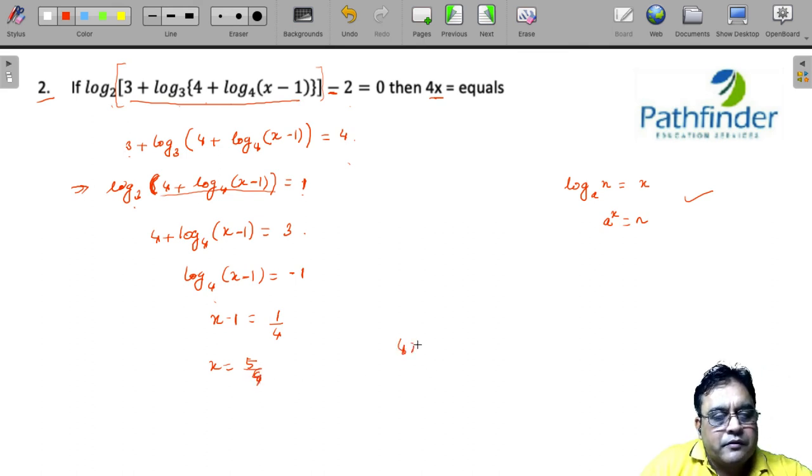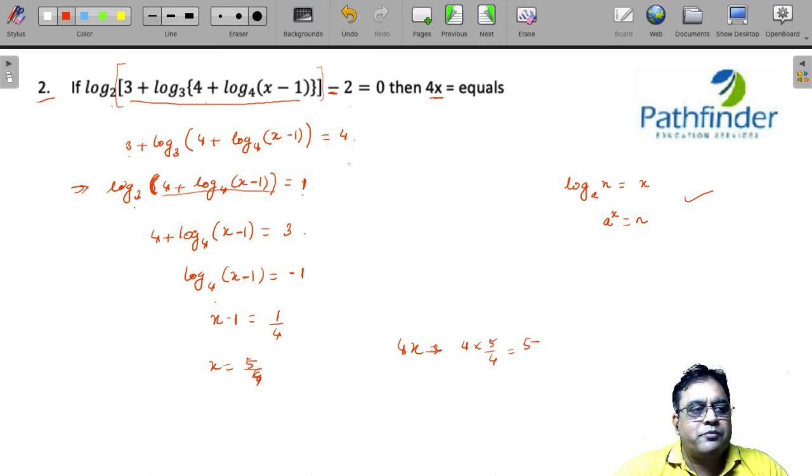What does it mean? 4x equals 4 into 5 by 4, which is 5, and that happens to be your answer.